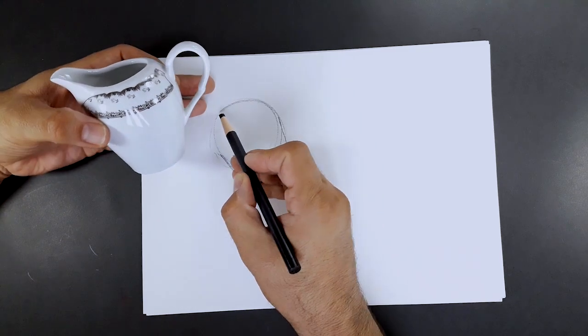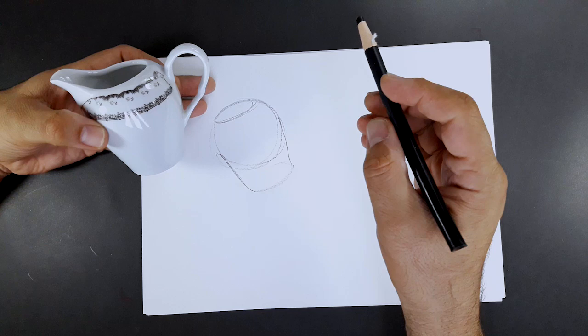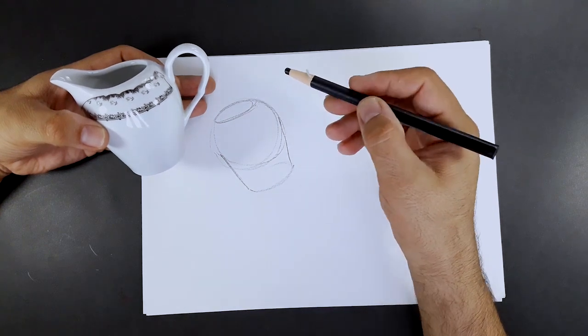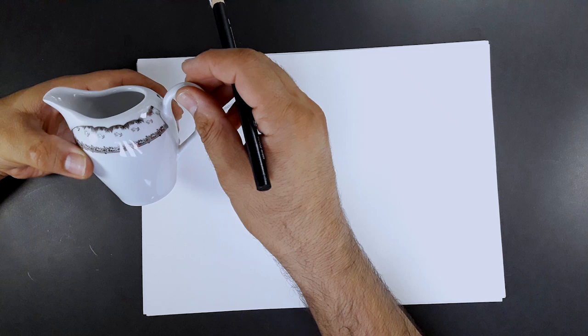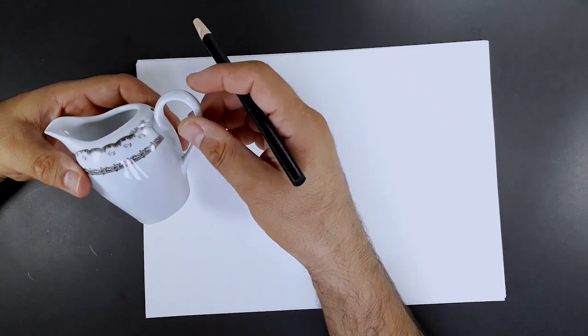Look at the opening of the container that I have to draw as an ellipse. I also draw a circle as the container handle because it shows the shape of the container handle.